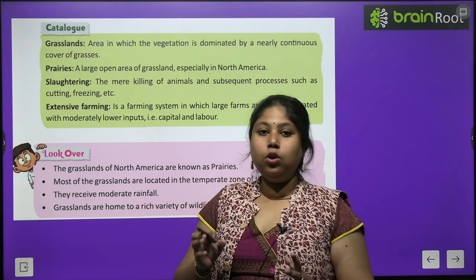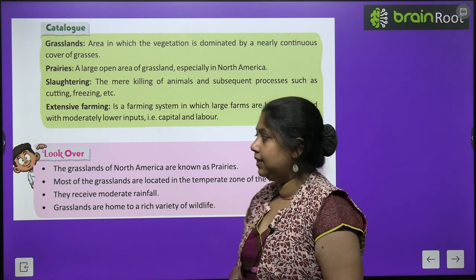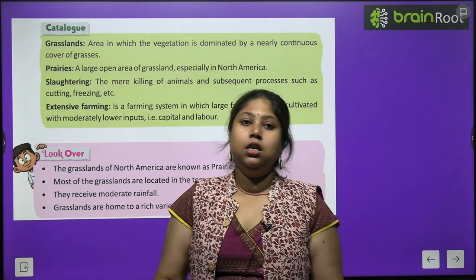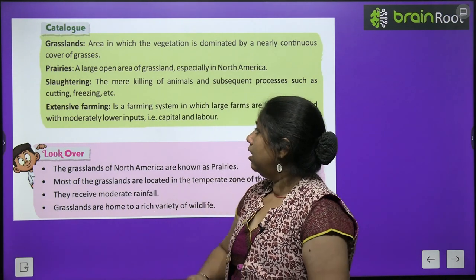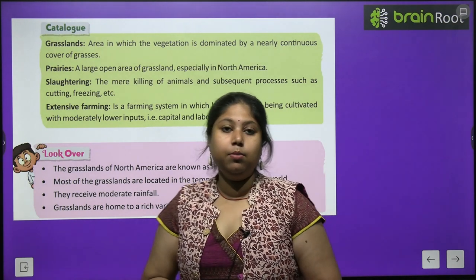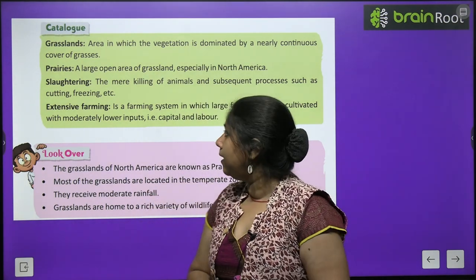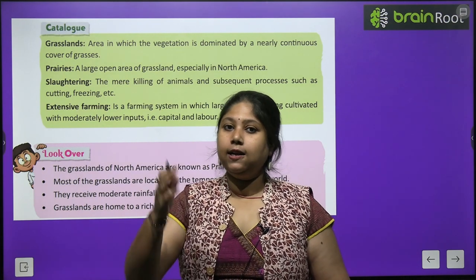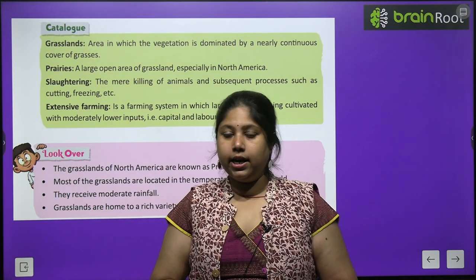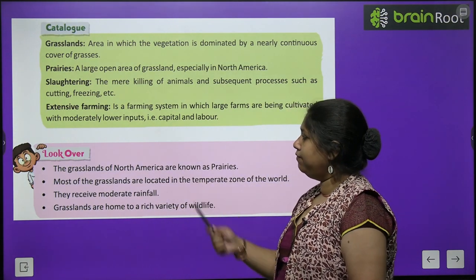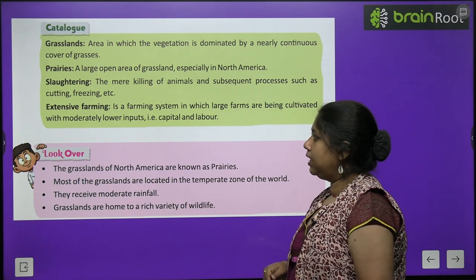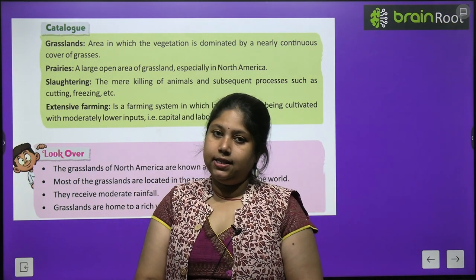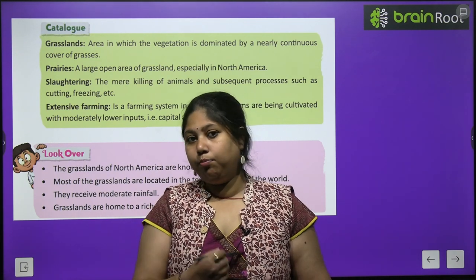Let's look at important terms from this chapter. Grasslands: areas where vegetation is dominated by a nearly continuous cover of grasses. Prairies: large open areas of grassland, especially in North America, also called the world's food bowl. Slaughtering: the killing of animals and subsequent cutting and freezing for food. Extensive farming: a farming system where large farms are cultivated with moderately lower inputs of capital and labour using modern techniques.